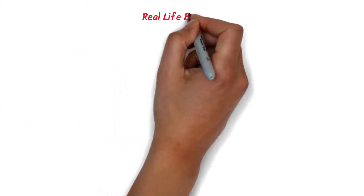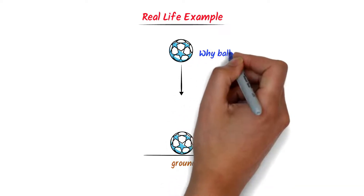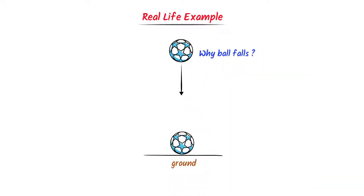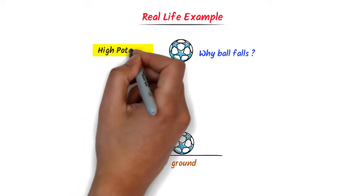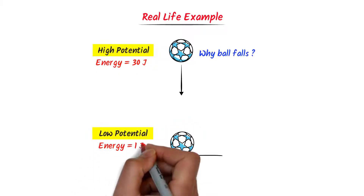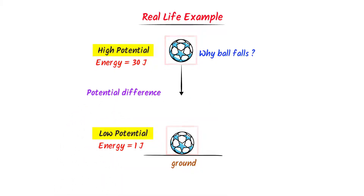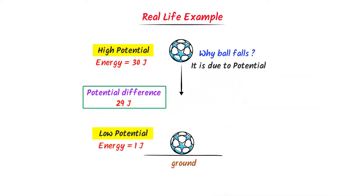Let me teach you one real-life example. Consider a ball at a certain height above the ground. When we release this ball, it accelerates towards the ground. Why does the ball accelerate towards the ground? The answer is simple. At this height, the ball possesses high potential energy — let it be 30 joules. While at the ground, the ball possesses low potential energy — let it be 1 joule. The potential difference between this region and this region is 29 joules. Thus, it is the potential difference due to which this ball moves towards the ground.